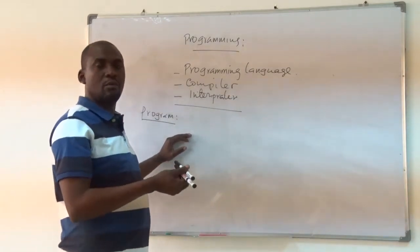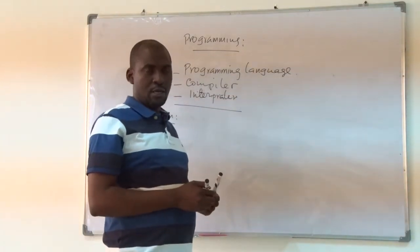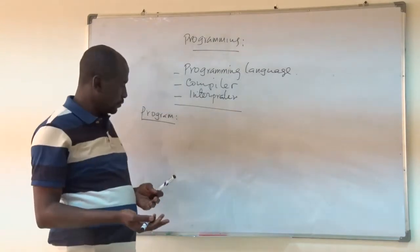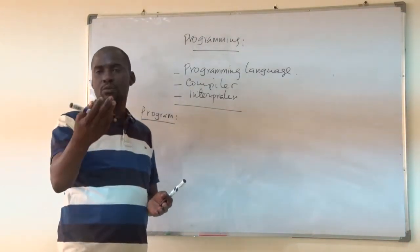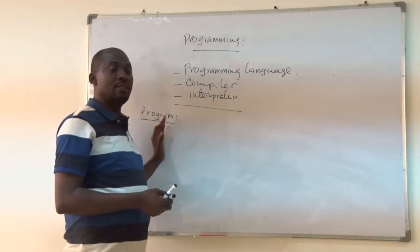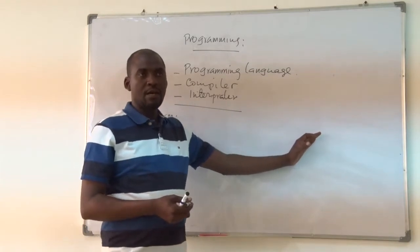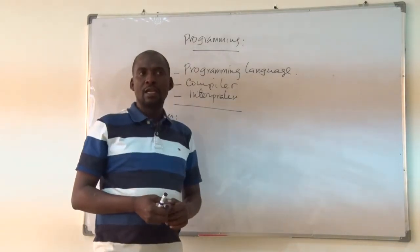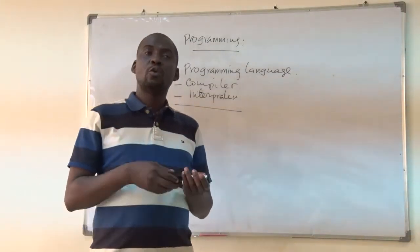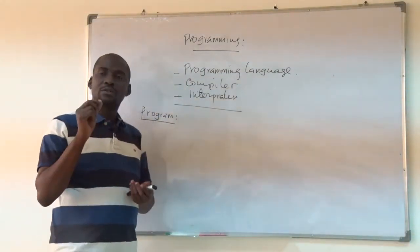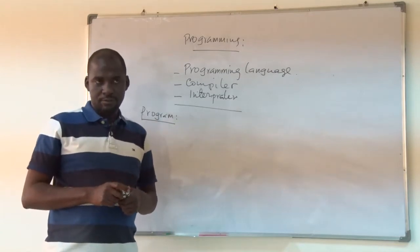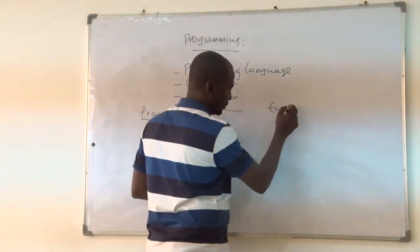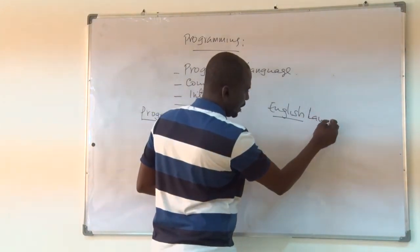Programming can also be defined as the way you instruct the computer how to work. When you instruct, there must be an instructor and somebody who is instructed. For instance, here in class I'm instructing you. A program is the instructor and the computer is the one being instructed. The rule of instruction is that you cannot instruct without using a specific language. For example, I'm instructing you in English language.